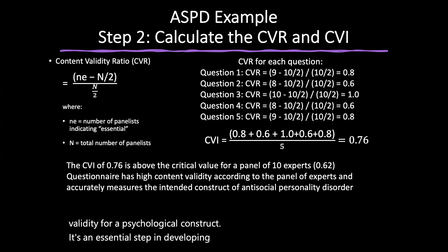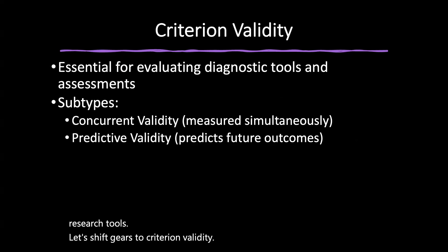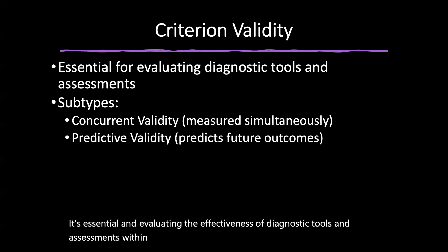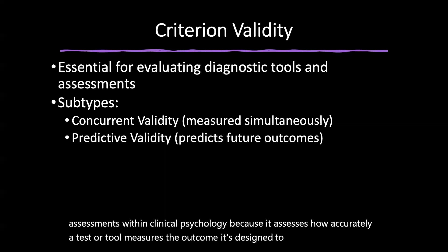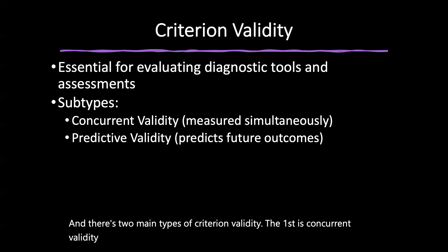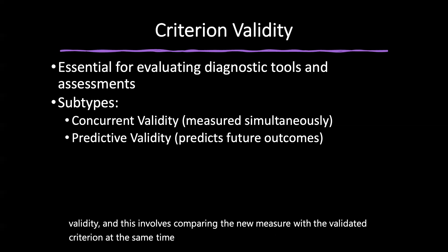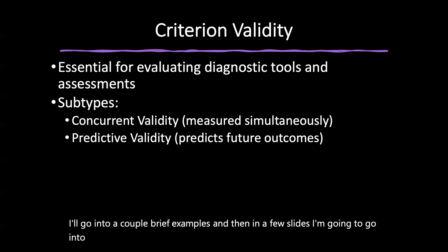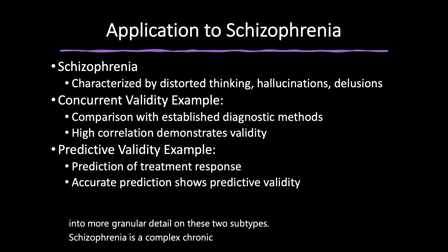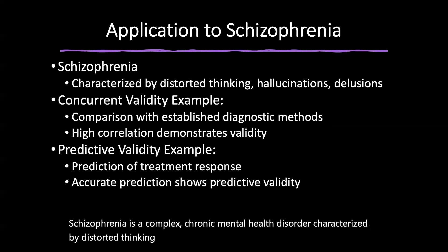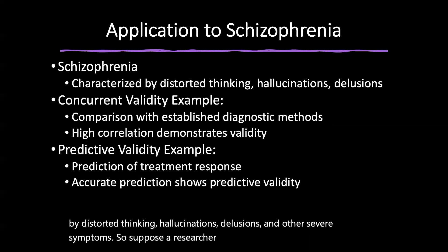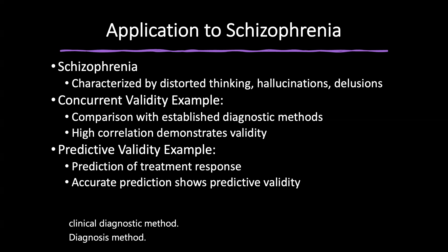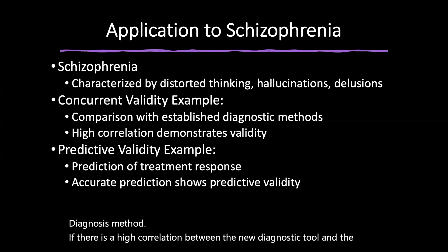To measure criterion validity: for concurrent validity, this involves statistically testing the new measurement tool against an established criterion simultaneously — for example, correlating a new test for assessing delusional disorder with an existing validated tool, where a strong positive correlation indicates concurrent validity. For predictive validity, this involves testing the new tool against future performance or outcomes — for example, a new screening tool for early psychosis could be tested to see if it predicts long-term treatment responsiveness. The statistical evaluation uses the correlation coefficient, and Pearson's r measures the strength of the relationship between the new test and the criterion variable.